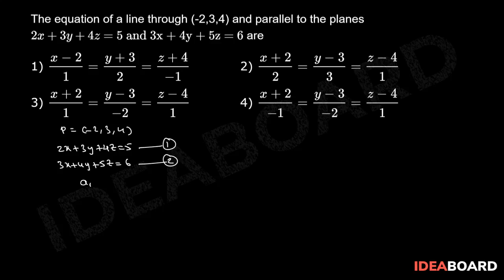Let a, b, c be the direction ratios of the required line. Given the required line is parallel to the planes 1 and 2, that means the required line will be perpendicular to the normals of these planes. Therefore, we have 2a + 3b + 4c = 0 and 3a + 4b + 5c = 0.